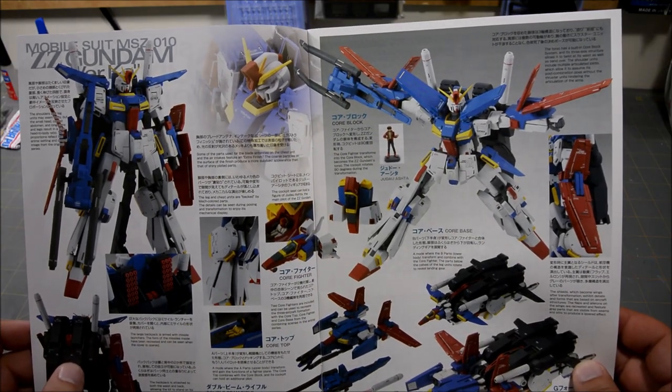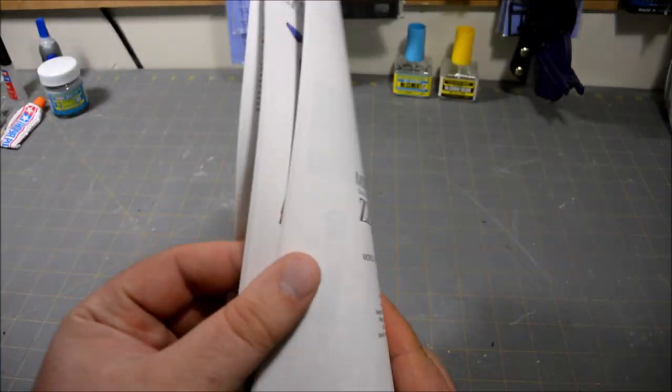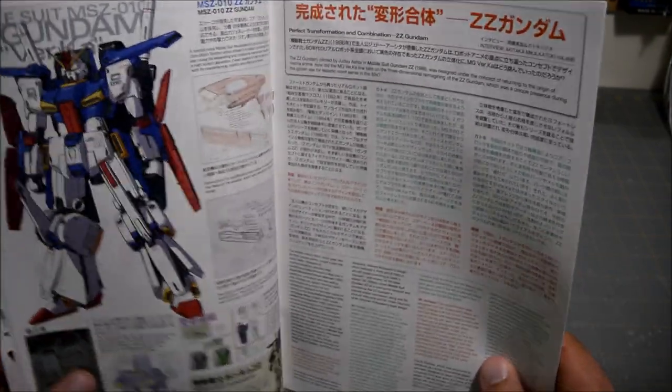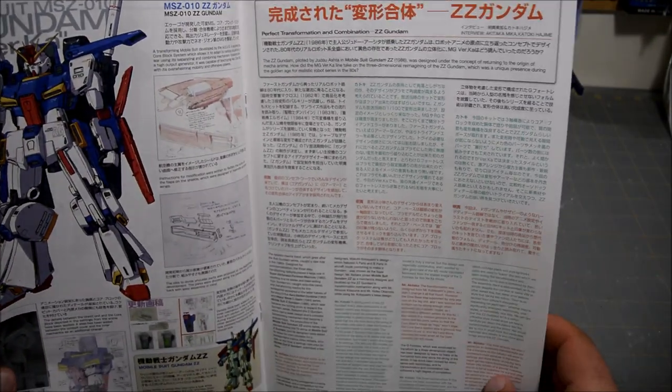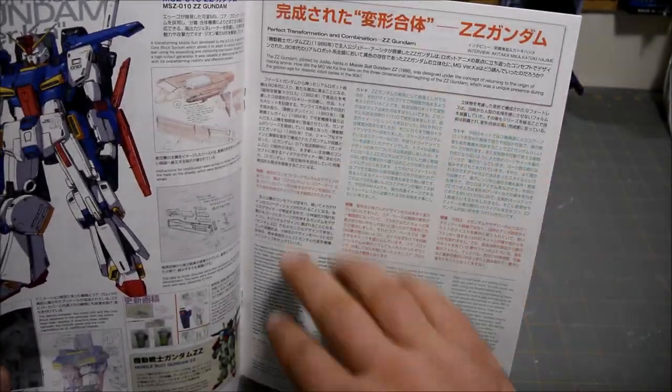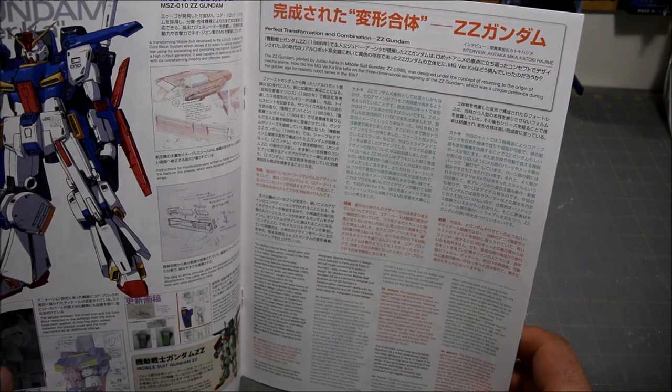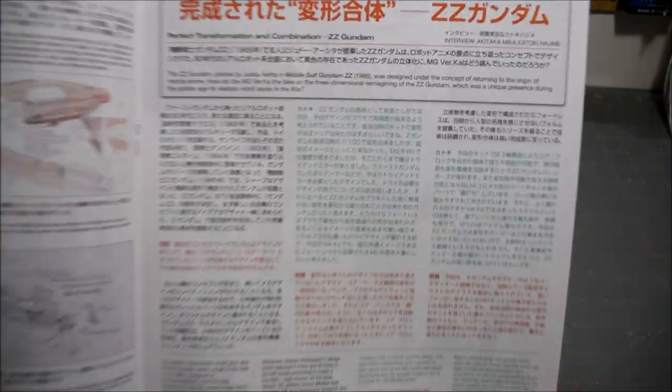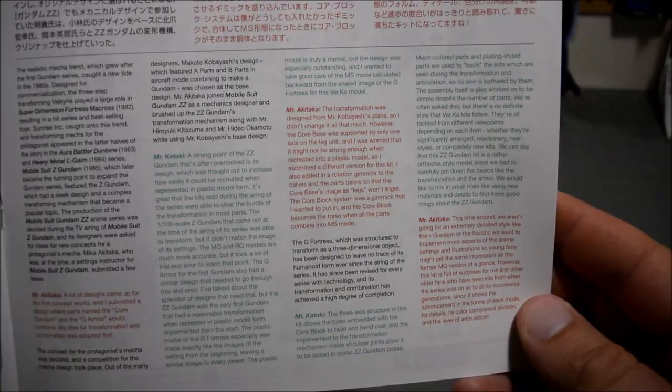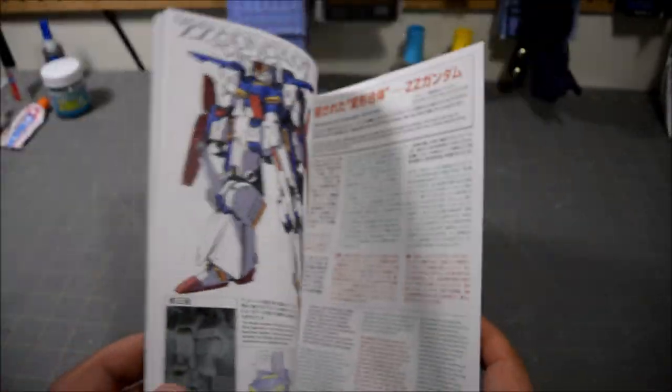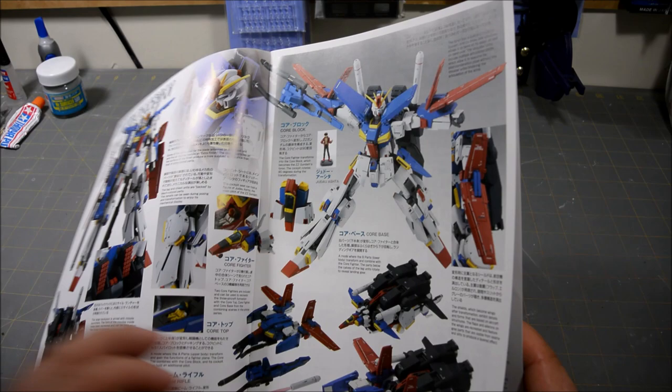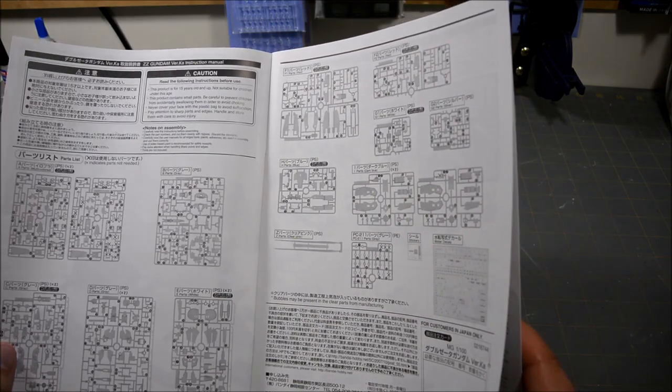But now it's all been translated into English, which is really useful for these design interviews. Like here's an interview with Katoki talking about making the Double Zeta Verka, and you got the Japanese up at the top and then the English translation down at the bottom. So that'll be really cool to flip through that and read about how this kit was made.